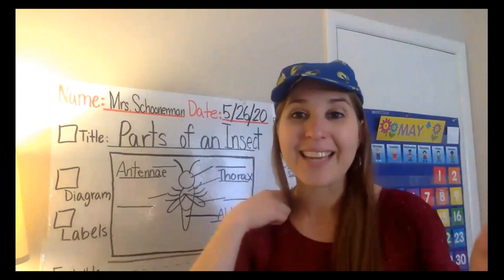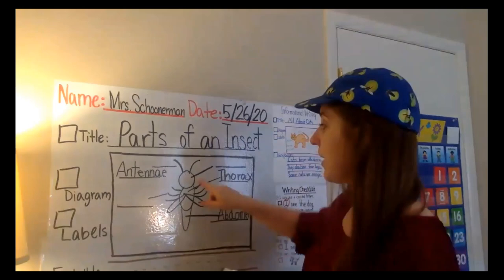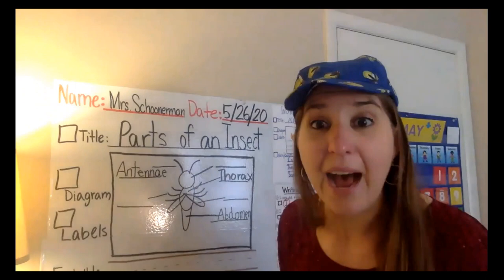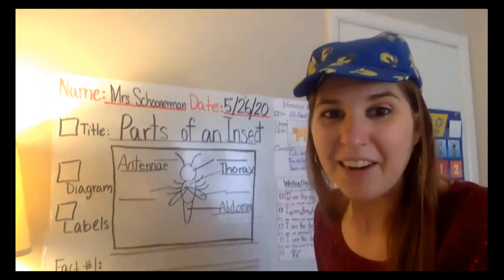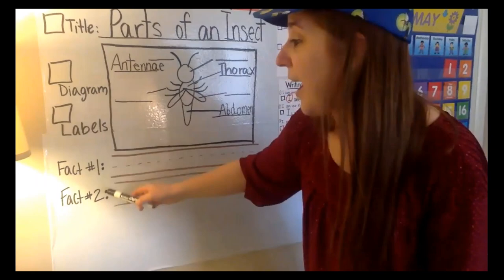Now remember, at home I want you to add three more labels when the video is done. You can add the label for head, you could add a label for legs, and you could add a label for the wings. Or maybe you're going to add eyes to your insect because insects have eyes too. Or maybe you have a bumblebee so you made a little stinger on the end of yours and you're going to add the word stinger. But now together it's time to hit the next part of our target and complete the next part of our informational writing checklist — we need to write two facts. We're going to write one together, and then after the video is done you're going to go and write one more to make it two facts altogether.